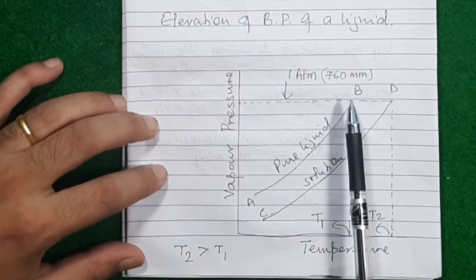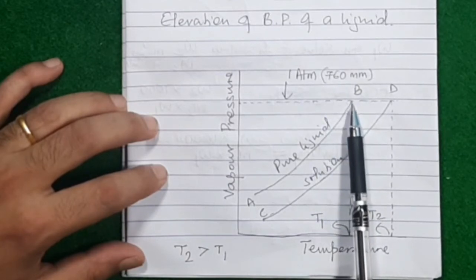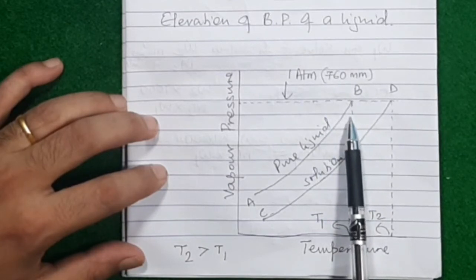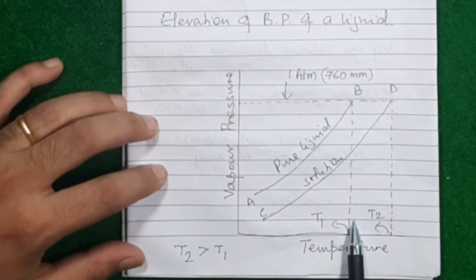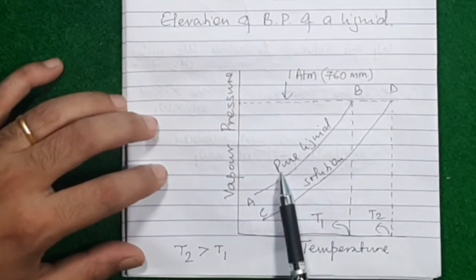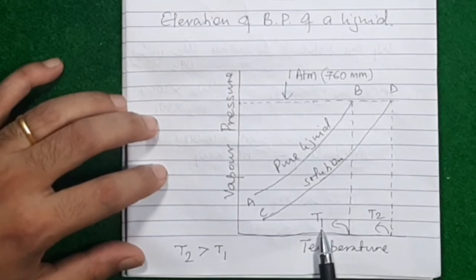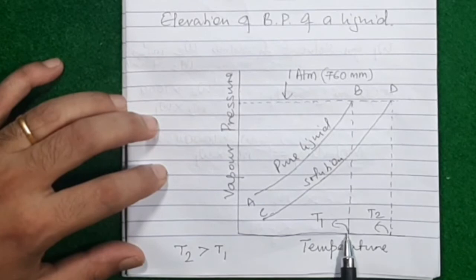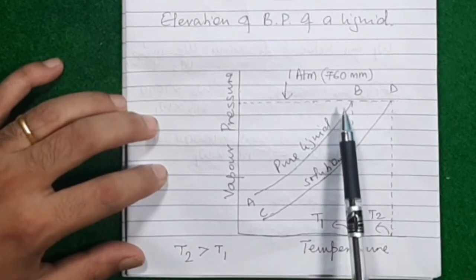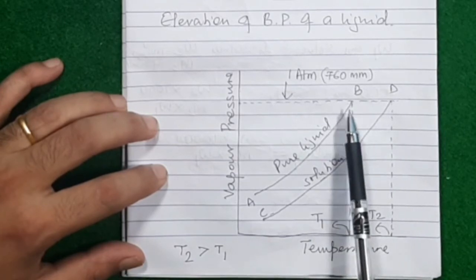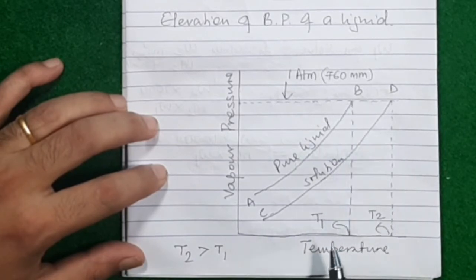At this particular temperature, the vapor pressure of this pure liquid becomes equal to atmospheric pressure. The corresponding temperature, marked here as T1, is where this pure liquid starts boiling. So the boiling point of this pure liquid is T1, because at that temperature its vapor pressure equals atmospheric pressure.